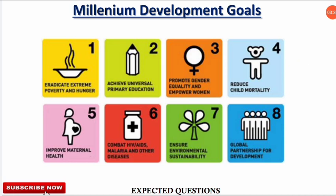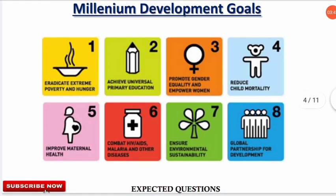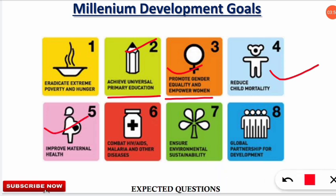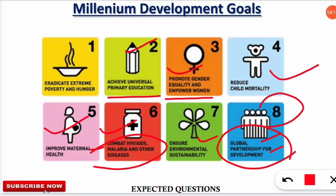The 8 Millennium Development Goals are: (1) eradicate extreme poverty and hunger, (2) achieve universal primary education, (3) promote gender equality and empower women, (4) reduce child mortality, (5) improve maternal health, (6) combat HIV/AIDS, malaria and other diseases, (7) ensure environmental sustainability, and (8) develop global partnerships for development. SDGs are the higher version of MDGs with 17 goals.